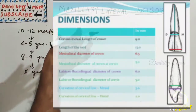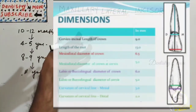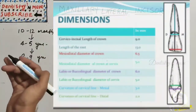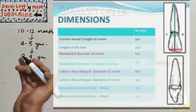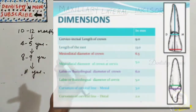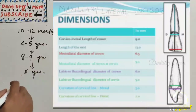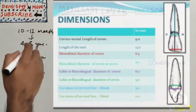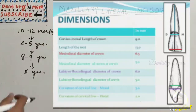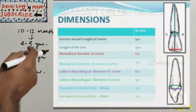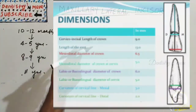The mesiodistal diameter of the crown at the cervix is 5 mm. The labiobuccal diameter is 6 mm, and the same at the cervix is 5 mm. The curvature of the cervical line mesially is 3 mm — which is very deep — and distally it is less, at 2 mm.